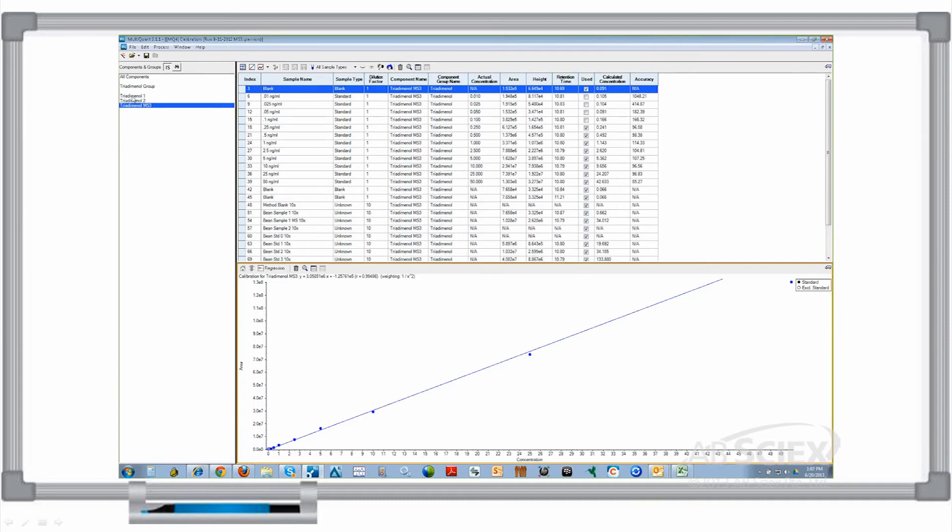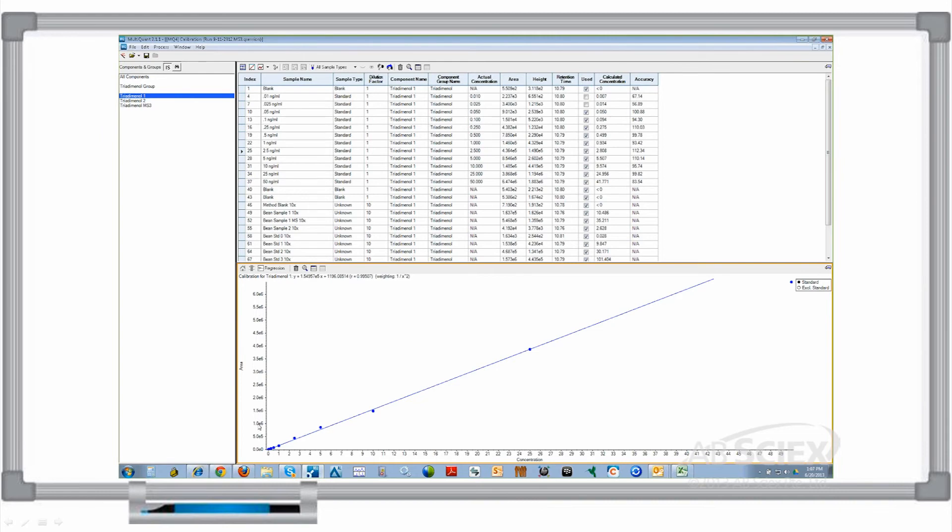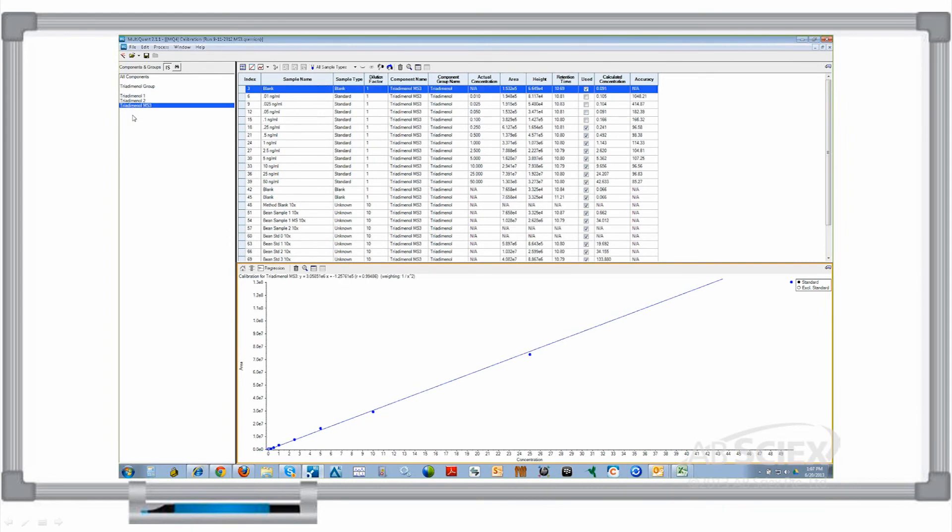When we review the calibration curves for the MRM transition, denoted here as triadminol 1, and MS to the third or MRM-cubed transition, denoted here as triadminol MS3, you can see that the curves are nearly identical with regression R values of 0.995 for both.